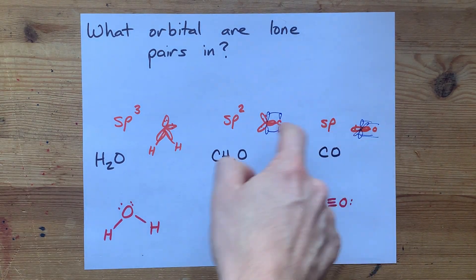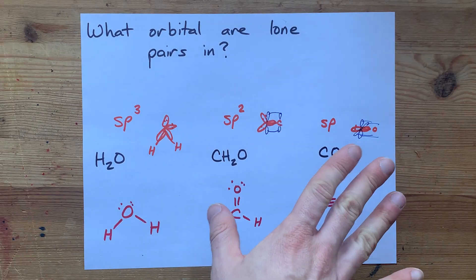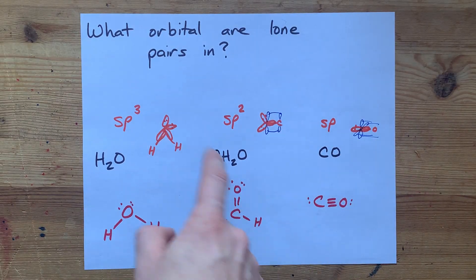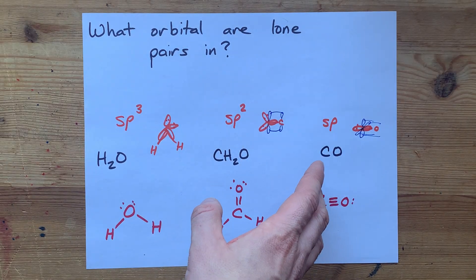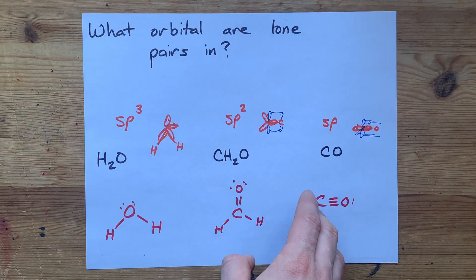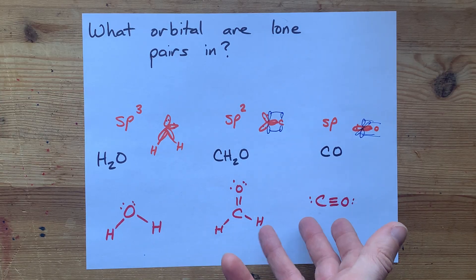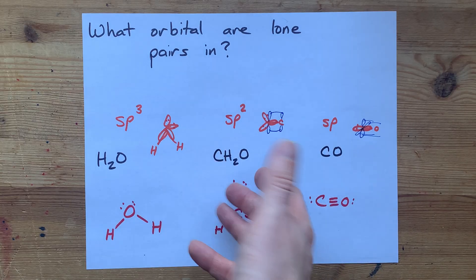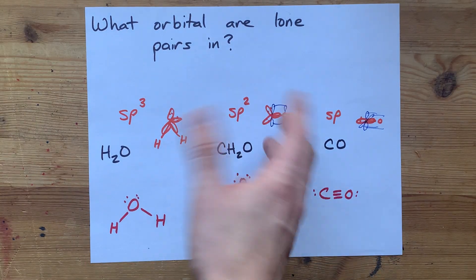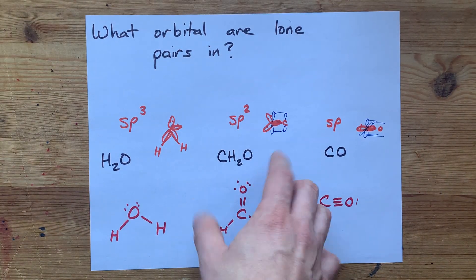Again, let's not overcomplicate the sigma and pi bonding here. Let's just remember, the lone pairs are in hybridized orbitals when you have hybridization occurring in the atom or molecule. Well, each atom hybridizes in the molecule, is what I mean. Thanks for bearing with me there, and best of luck.